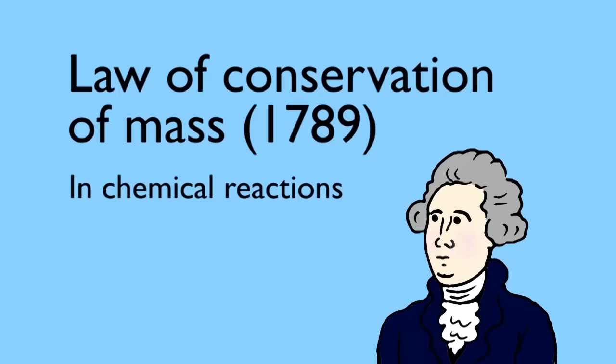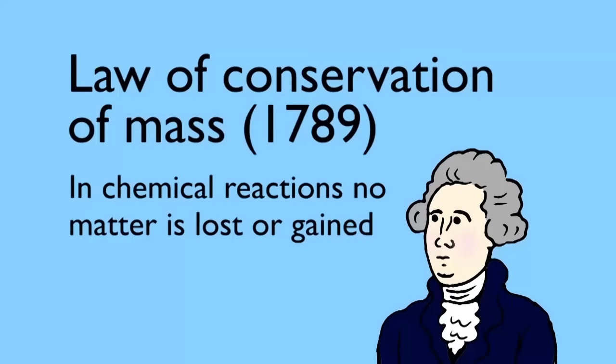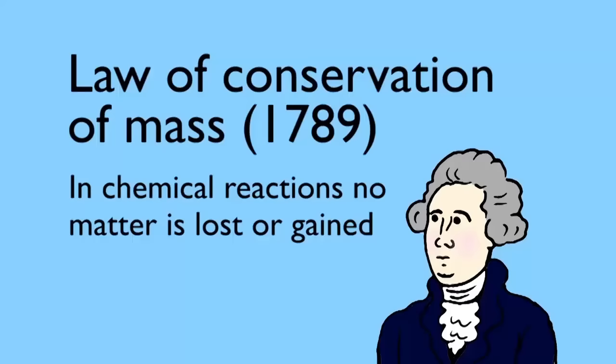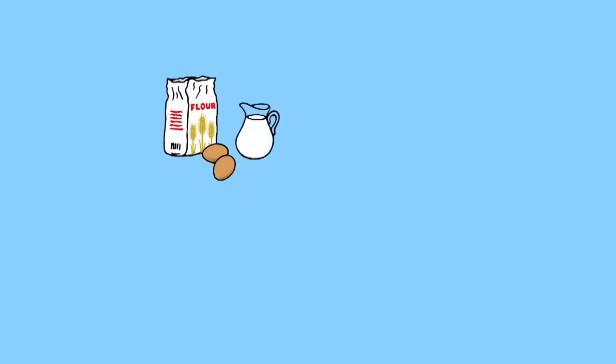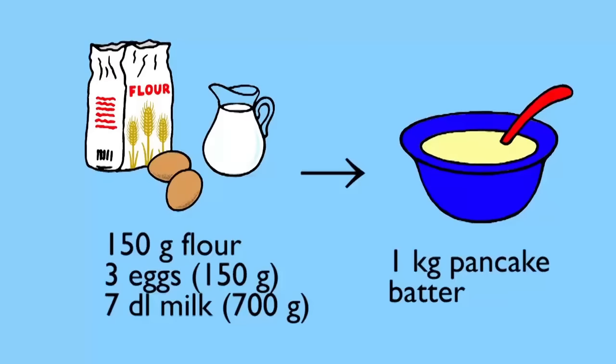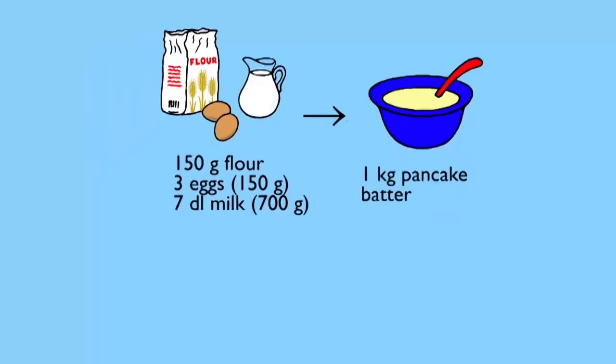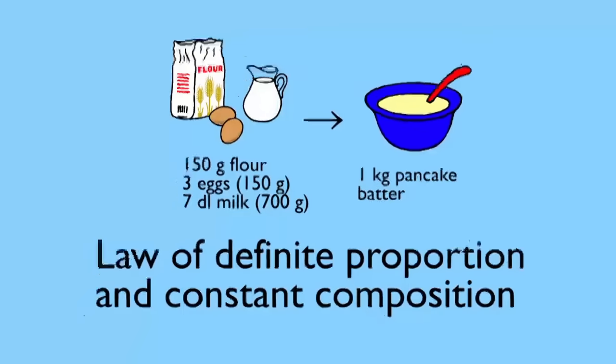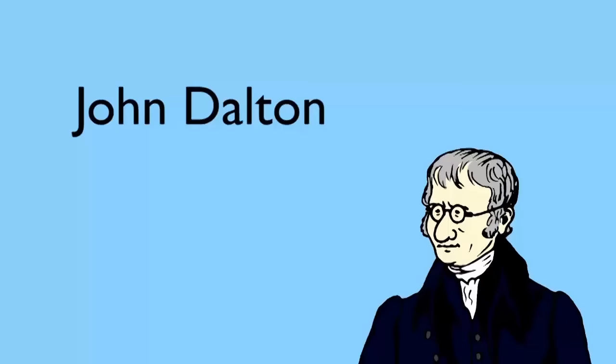These experiments on combining weights also showed that elements always combined in fixed ratios—the law of definite proportions and constant composition. They led Dalton to publish his atomic theory in 1808, and modern chemistry had started.